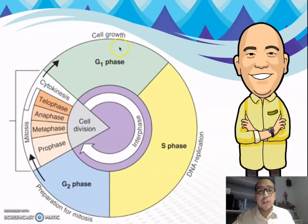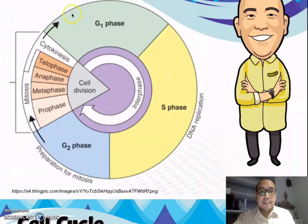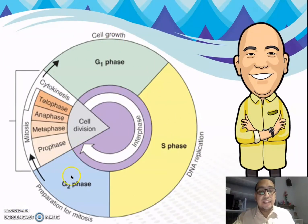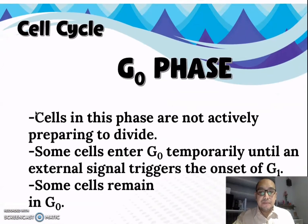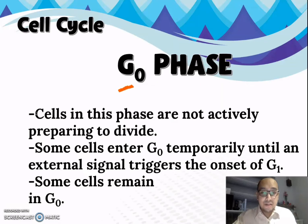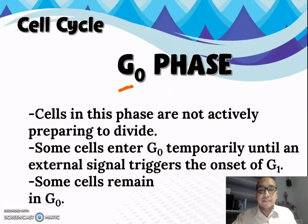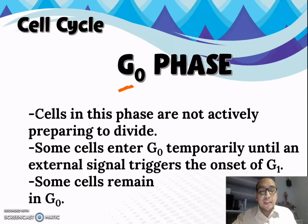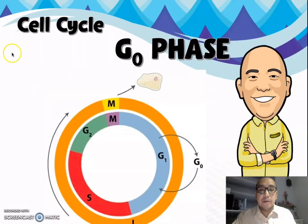Again, looking at the graphical representation of the cell cycle, we have the interphase — consisting of G1, S, and G2 phases — and then the M phase. We also have what we call the G0 phase. Cells in this phase are not actively preparing to divide. Some cells enter G0 temporarily until an external signal triggers the onset of G1, while others — such as mature cardiac cells and nerve cells — remain in G0 permanently.